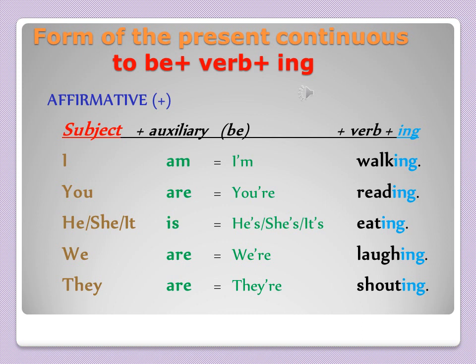We add 'ing' to the verb 'walk' with no change, and it goes with all subjects. For example: I am walking, you are reading, he/she is eating, we are laughing, they are shouting.